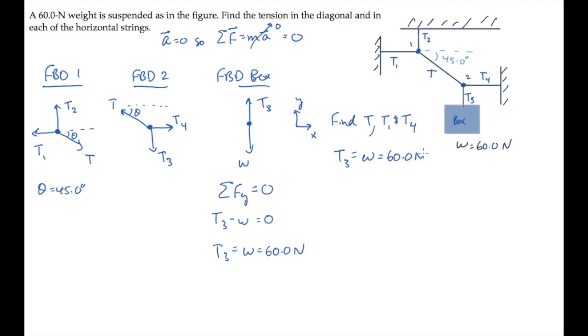Now let's look at the free-body diagram for knot number two, and apply Newton's second law in the vertical direction for it. The vertical component of the tension T is T sine theta, so we get T sine theta minus T3, equaling zero. That tells us that the tension in the diagonal rope is T3 over sine of theta. We can substitute the values and calculate, finding that it equals 84.9 Newtons. So that's one of the unknowns we were asked to find, and I'll record its value here.